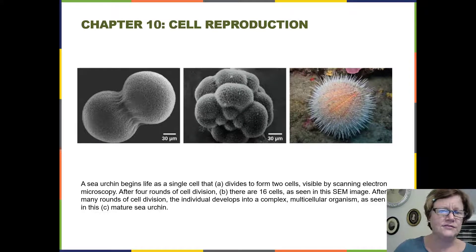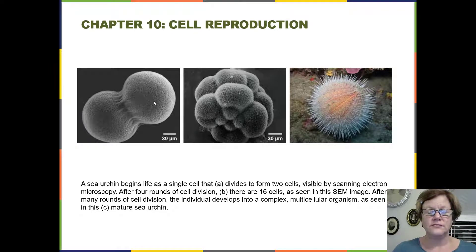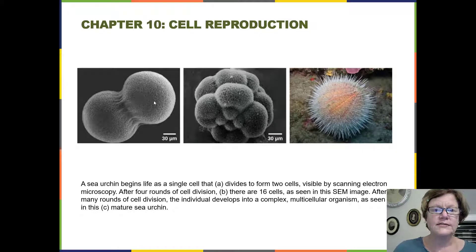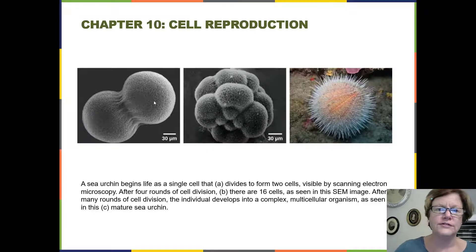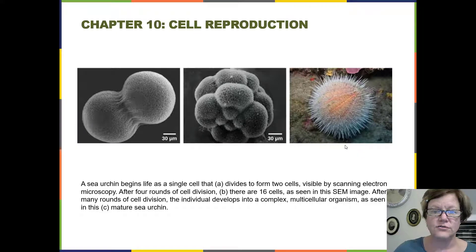That process continues. Each product cell from a series of cell division events becomes the initial cell for another round of events. So this is a cycle — when each cell divides again and again, you end up with a multicellular embryo shown in the middle. Those cells continue to divide until you have so many cells that you don't need a microscope anymore. You can see the whole organism in the adult stage on the far right.